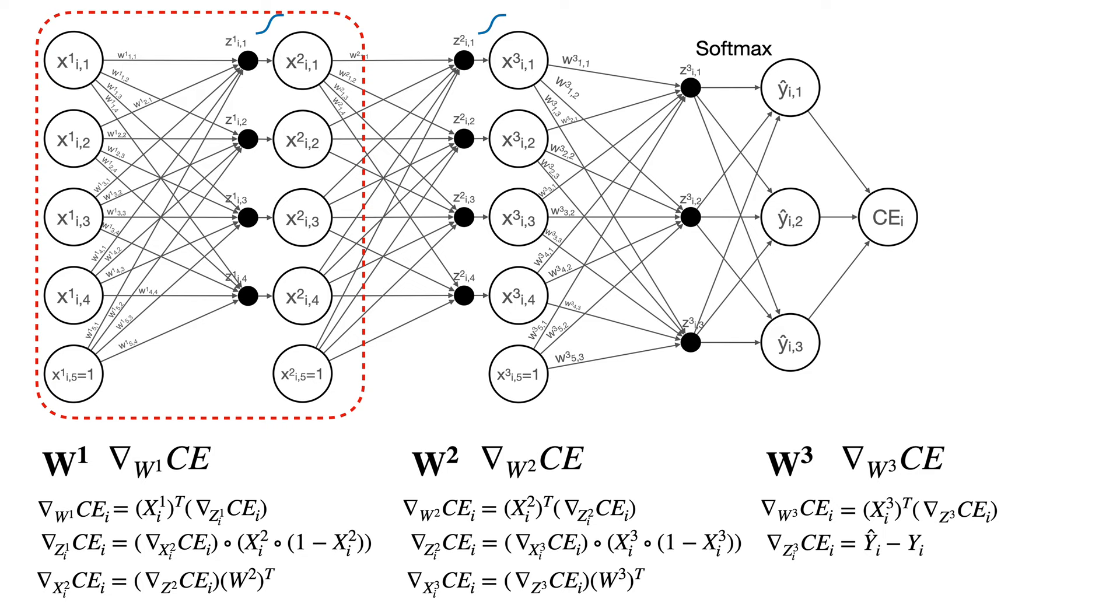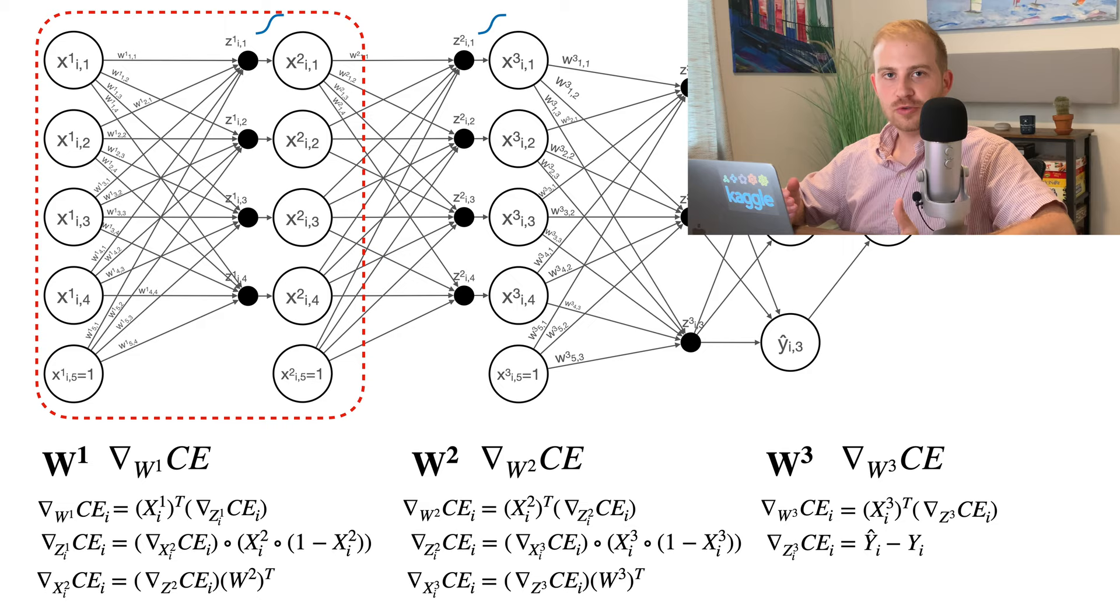Essentially, what I'm getting at is the neural network has a natural recursive structure. So we can define the gradients recursively, and that'll allow us to implement a neural network with any number of hidden layers.